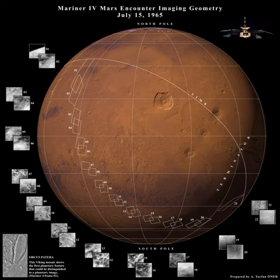Mariner Program spacecraft: Mariner 4 mapped 1% of Mars with 21 images and returned other data. Mariner 6 and Mariner 7 returned data from Mars flybys, mapping about 20% of Mars more closely with a couple hundred images.